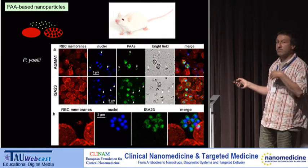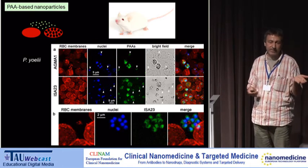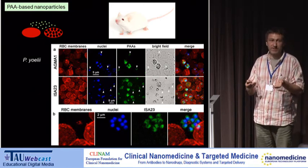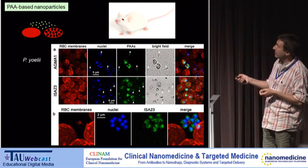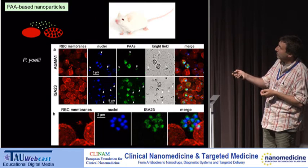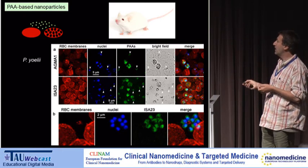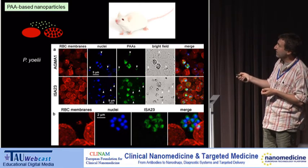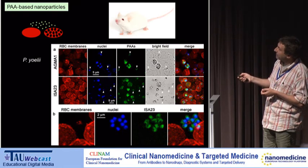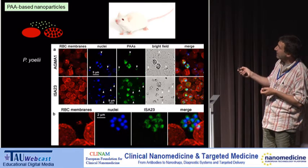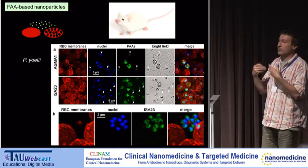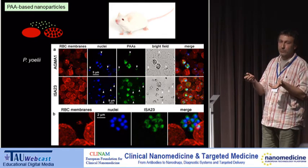Because we target falciparum, in vivo testing is complicated and requires a special rodent model. Another good surprise: when we add the polymers to infected blood from a rodent malaria parasite, Plasmodium yoelii infecting mouse blood, we again see specific targeting. In this case, we can also target the ring stages — the earliest intraerythrocytic stages — which is beneficial because it gives the drug more time to act.